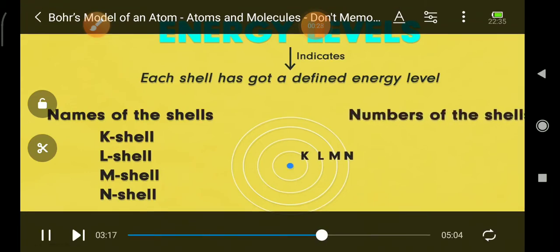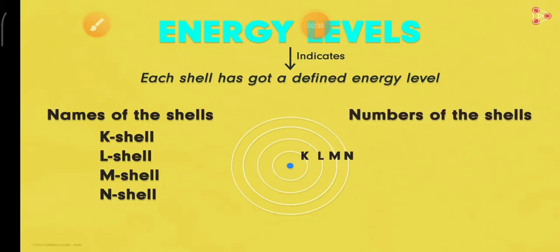And also numbers. So the shells, we are given numbers also. So N equals N1. So K is 1, L is 2, M is 3, N is 4. So K, L, M, N and 1, 2, 3, 4, we can add it.